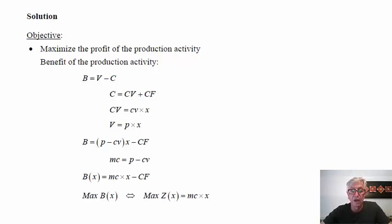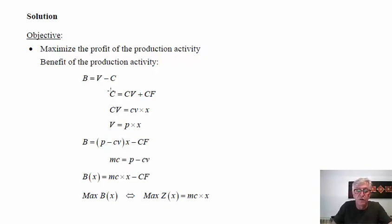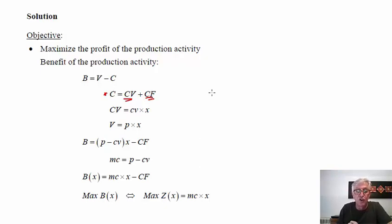We are going to use a variable which, if we maximize it, ensures we are maximizing the profit. We define a benefit as the difference between the value of sales and the cost of those sales. It is convenient to split costs into variable costs and fixed costs. Variable costs depend on the quantity produced — for example, the raw material cost per unit is the same, so the total variable cost is the unit variable cost CV multiplied by the quantity X.